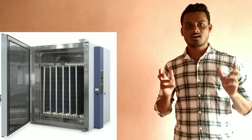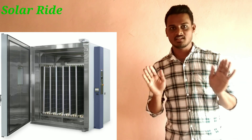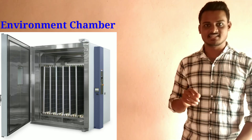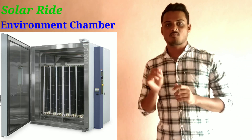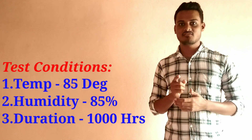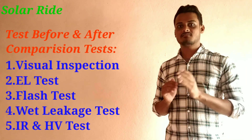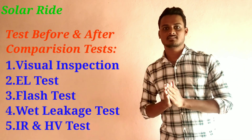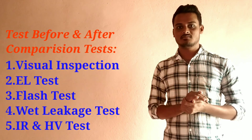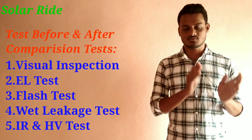You are all aware of ovens. Like that, there is one setup in the reliability lab for this DH test. In that setup, the module is fixed for 1000 hours at 85°C temperature and 85% RH. After completion of this 1000-hour period, we calculate the output of the solar module — that means a flash test is performed on the solar module.